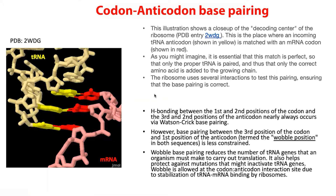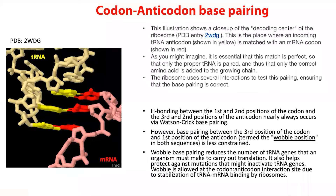An important additional point: the third base of the codon has a wobble — it is flexible. The question is how it is that the first two positions require strict Watson-Crick base pairing while the third has flexibility. The answer relates to the ribosomal structure: the ribosome surrounds this codon-anticodon recognition site and tweaks the third base, allowing more flexibility. This is part of the biological process, and why this flexibility applies only to the third position is not fully understood.